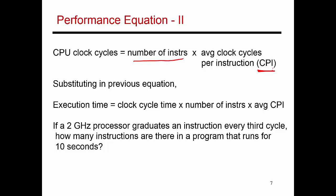So if you look at this example down over here, I'm assuming a 2 GHz processor that graduates an instruction in every third cycle. That means every instruction roughly takes 3 cycles to finish, so a CPI of 3, and the question is how many instructions are there in this program if it runs for 10 seconds.